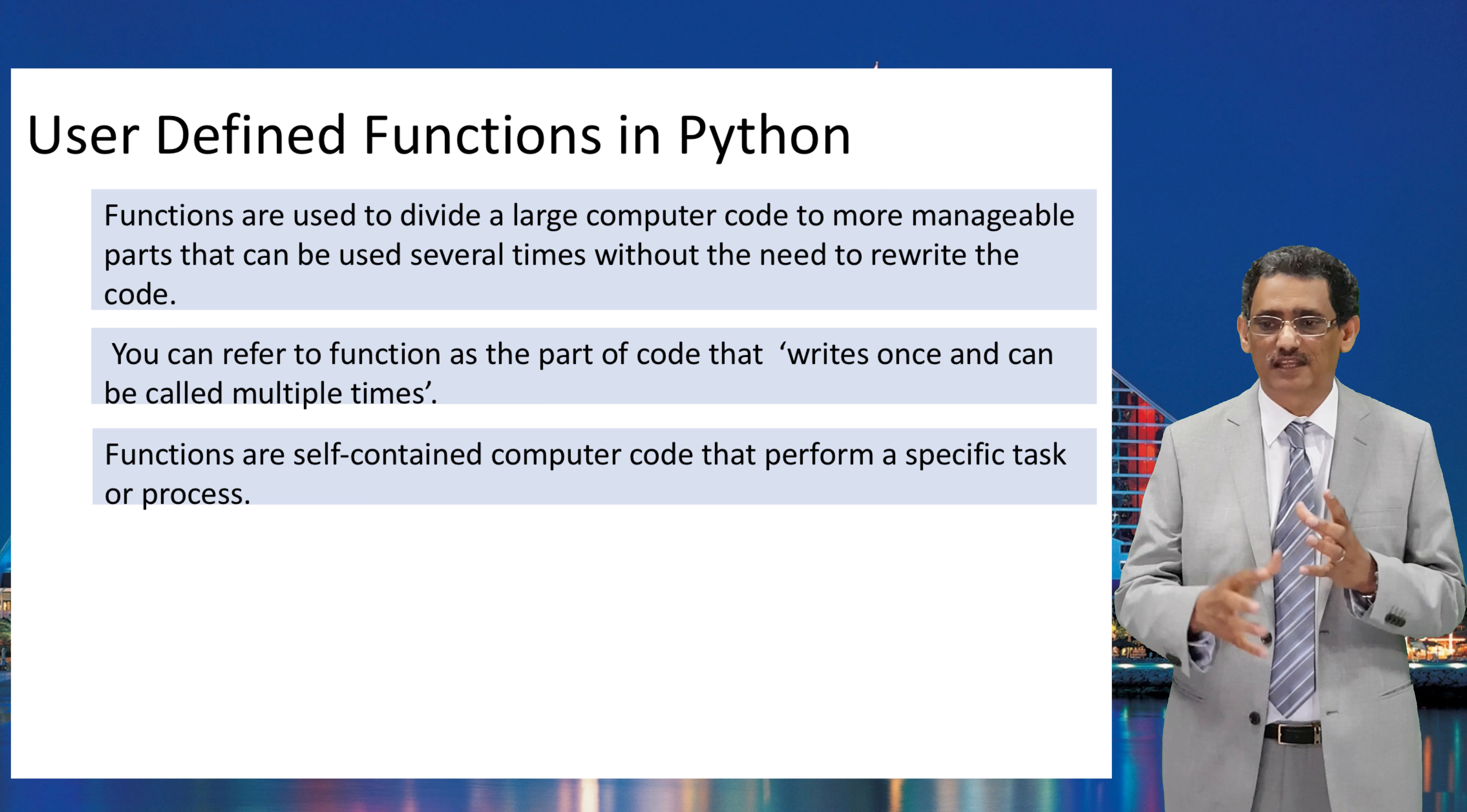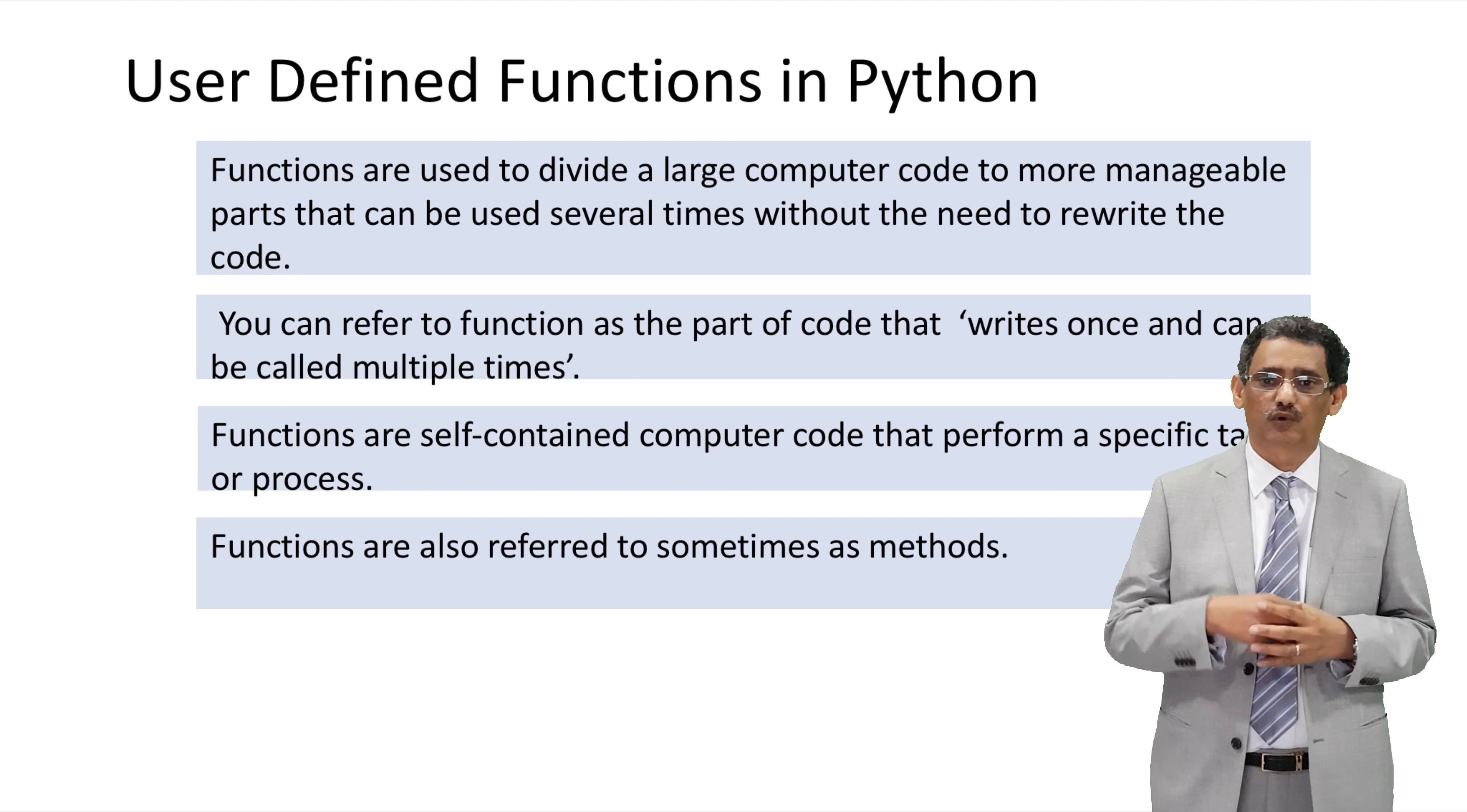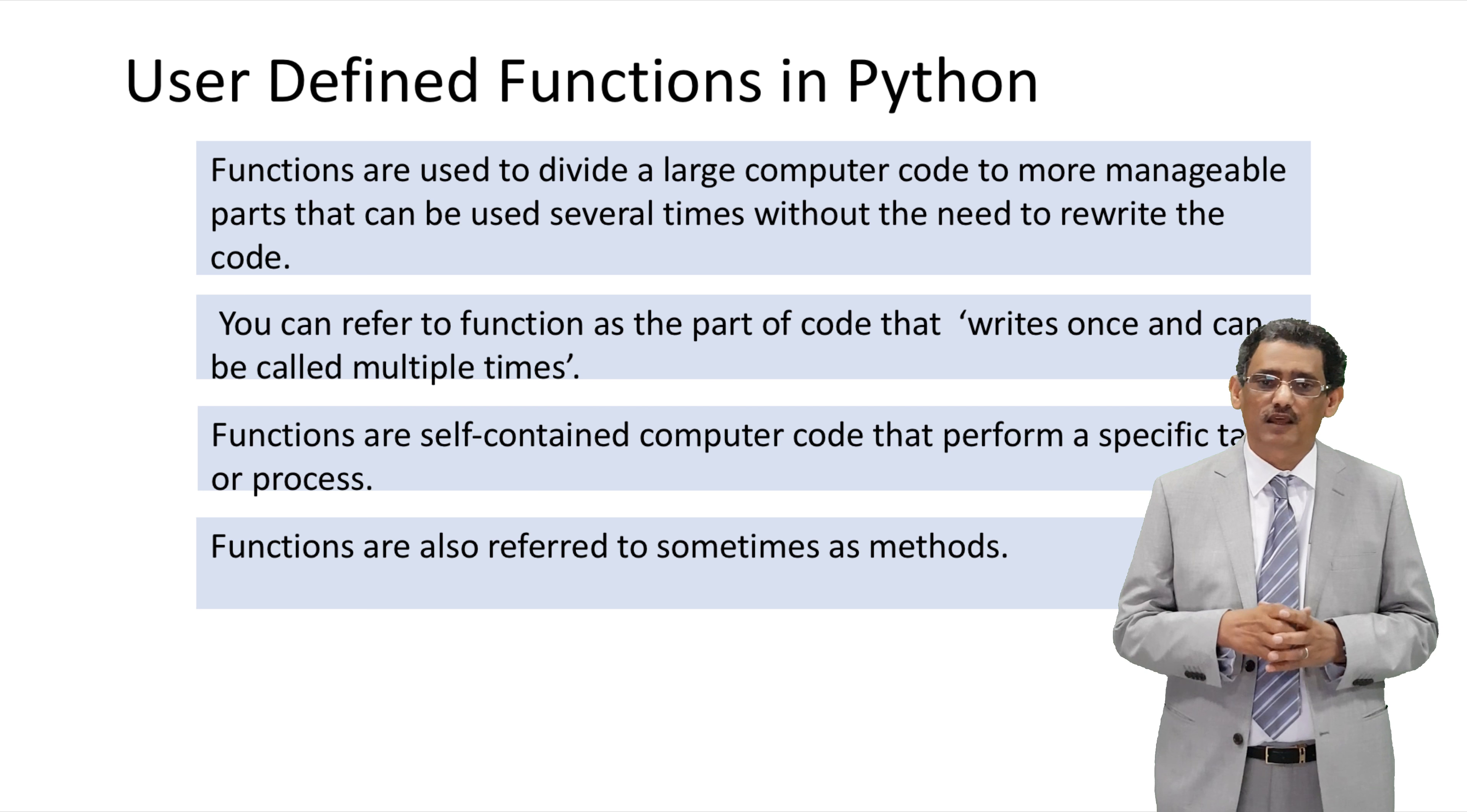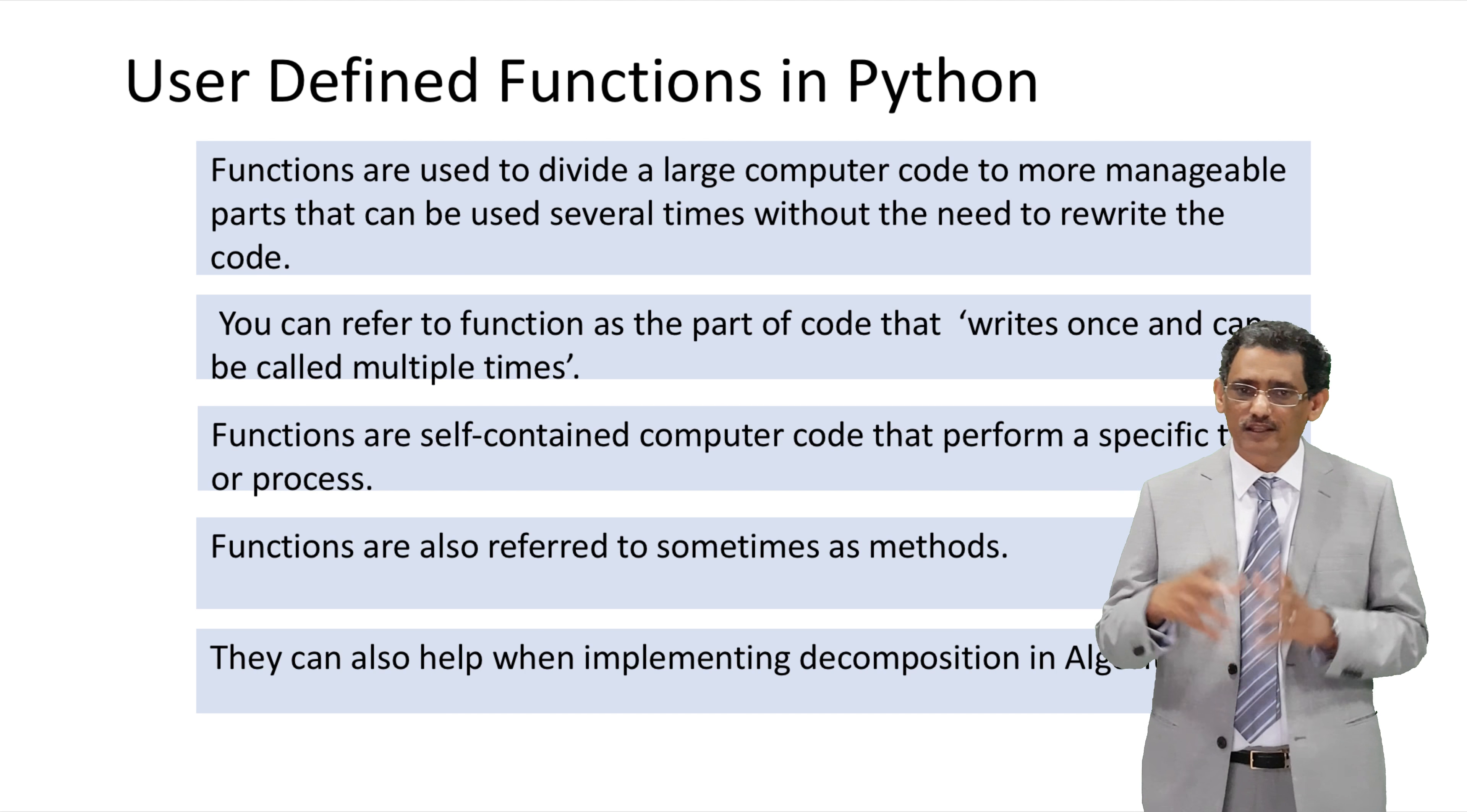So it is a self-contained computer code that performs a specific task or process or operation for you. Sometime we have the word method, we have procedure, we have so many names. These are the same. Functions, methods, procedures are all the same. So you want to decompose your code and create it in smaller functions. Function is an implementation of decomposition which we talked about before.